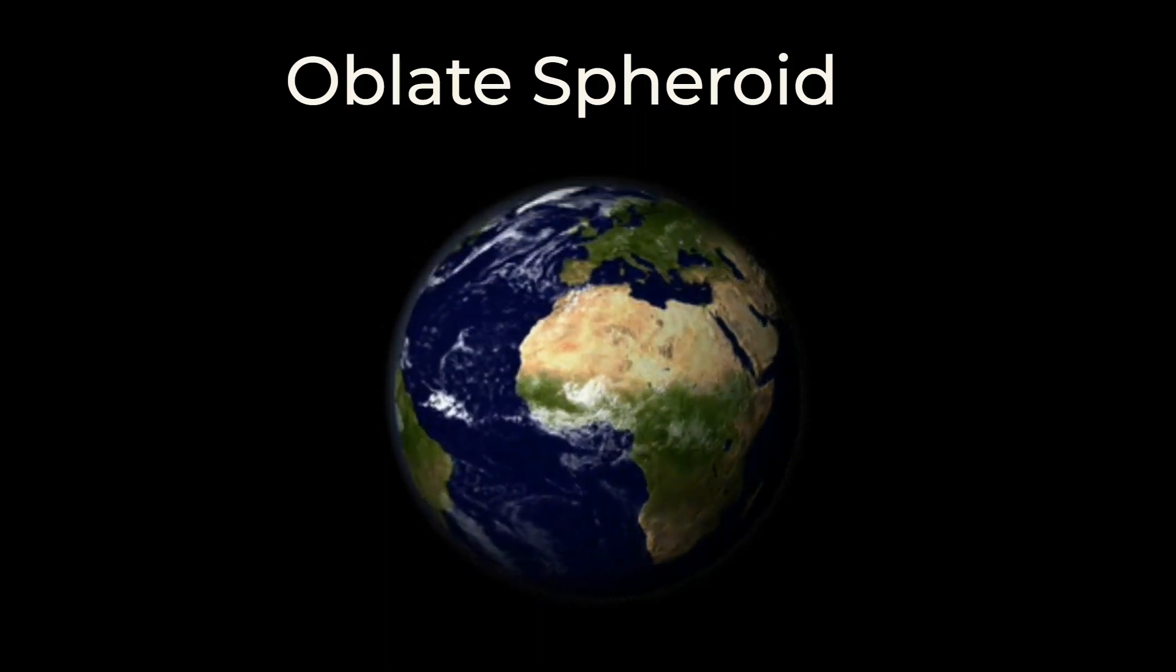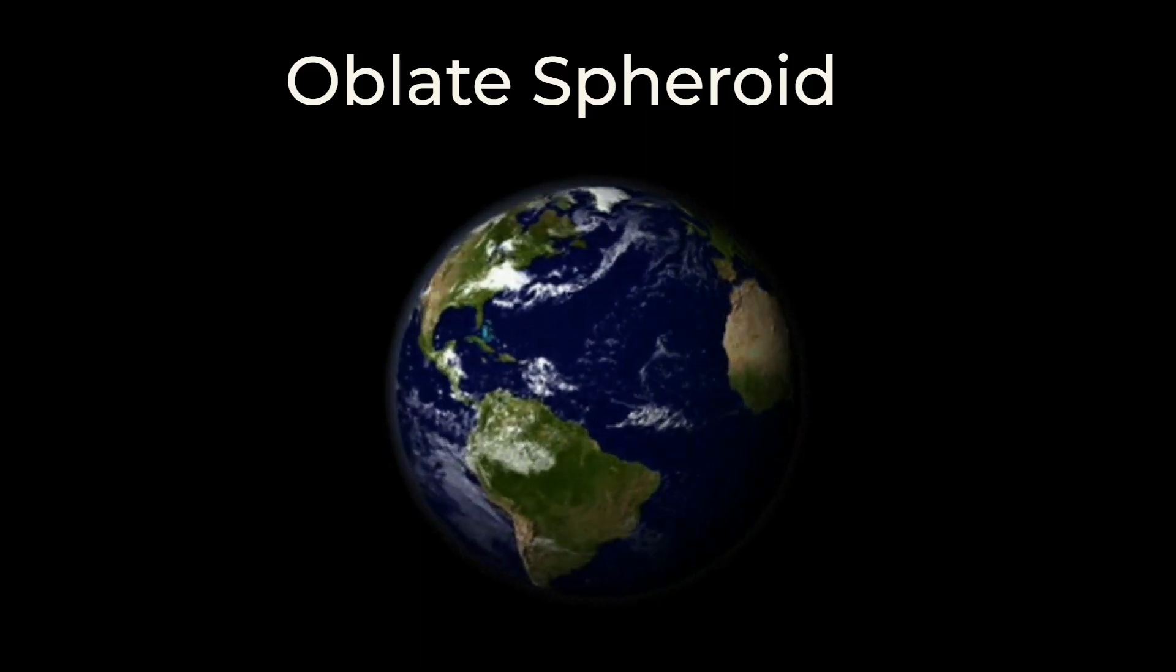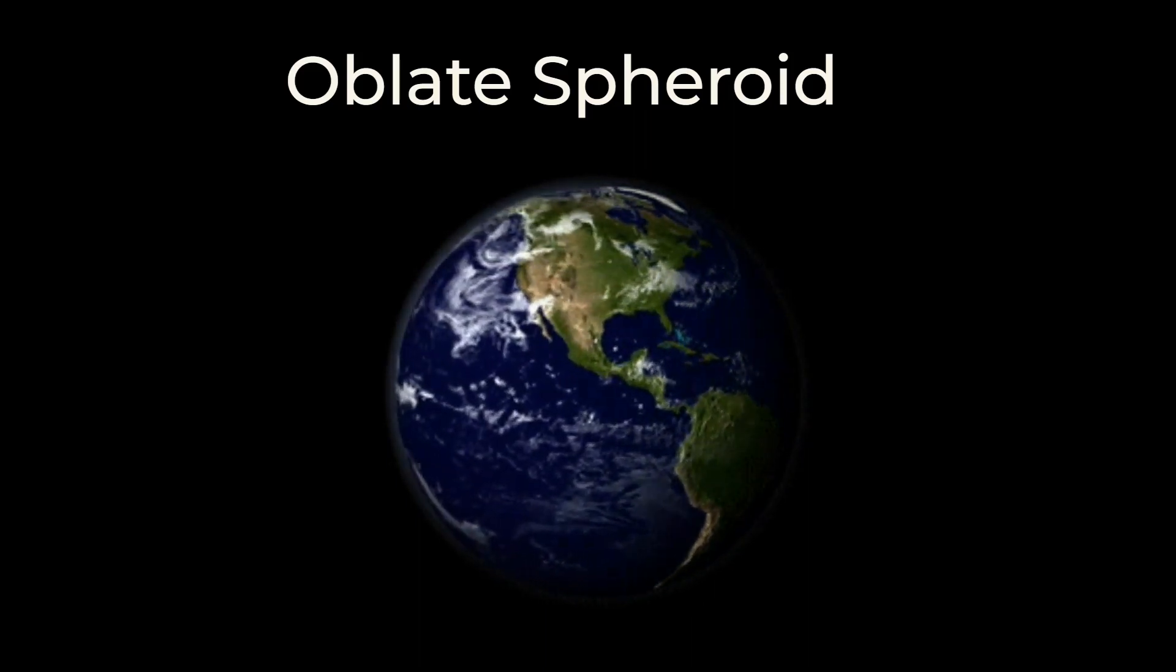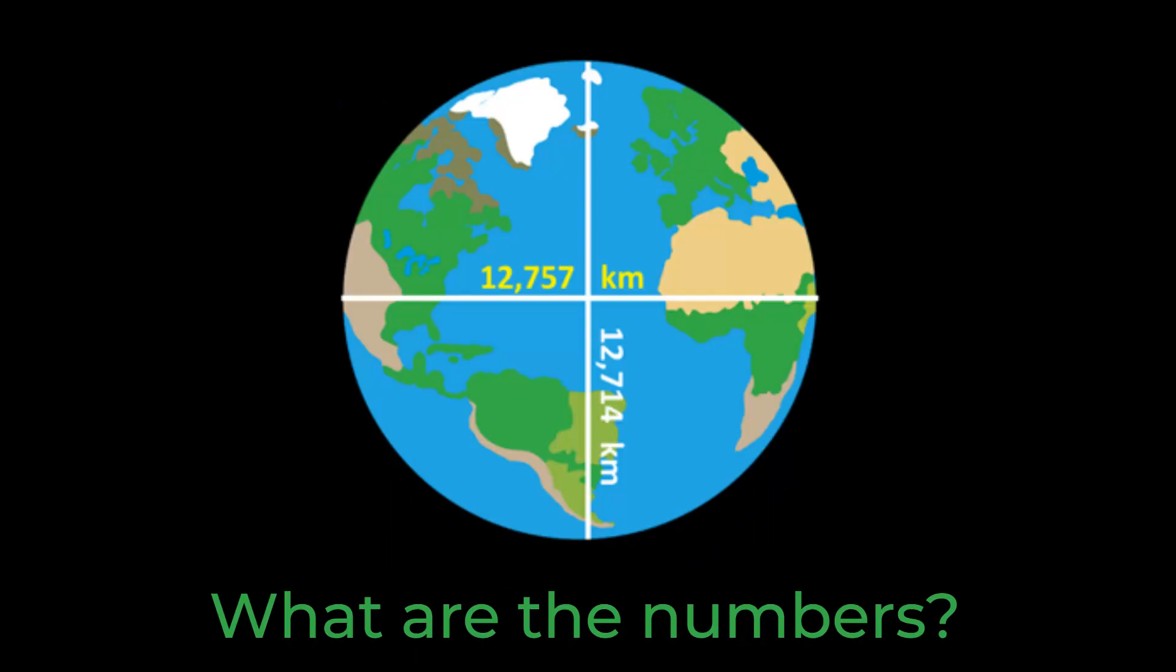Or an ellipsoid. It is essentially a sphere, but slightly squished. The Earth is approximately 43 kilometers, or 26.7 miles wider at the equator.